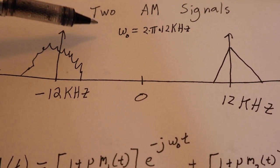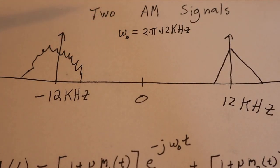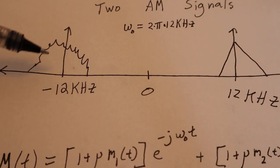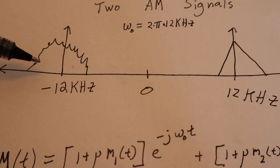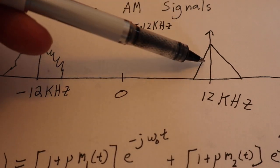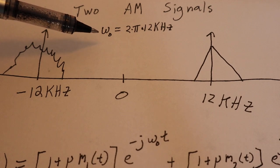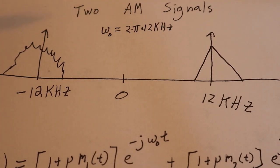I talked about two amplitude AM signals that I made. I made one of the AM radio signals at minus 12 kHz carrier, and I made another at plus 12 kHz carrier. And omega zero is 2 pi times 12 kHz.